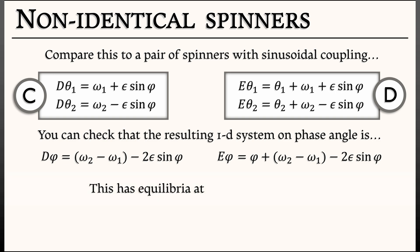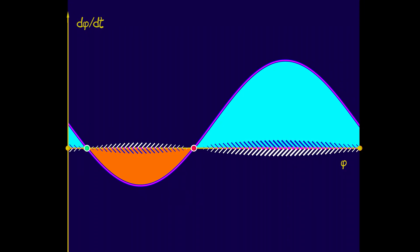This has an equilibrium at—it's the same math—(ω₂ - ω₁)/(2ε), but now what we need to do is take the arc sine of that. You have to be a little bit careful because we're on a circle and arc sine can take on multiple values. There are often going to be a pair of equilibria, one stable, one unstable. But for certain values of the omegas and ε, there might not be an equilibrium at all. Arc sine has a limited domain.